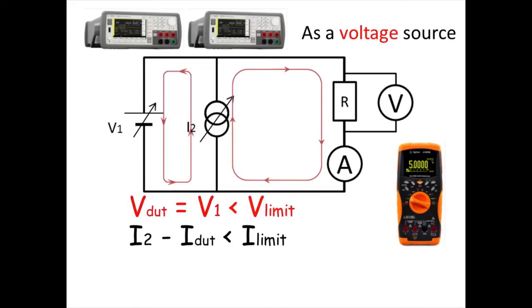The voltage limit of the current source must be greater than the output voltage of the voltage source. And the current limit of the voltage source must be greater than the output current of the current source minus the applied current of the DUT.